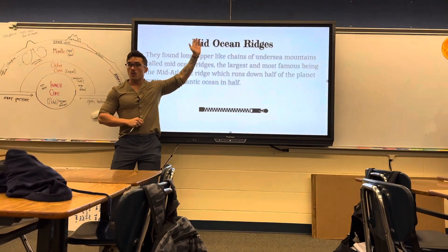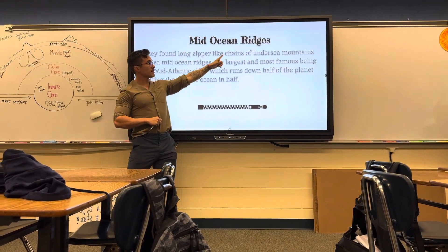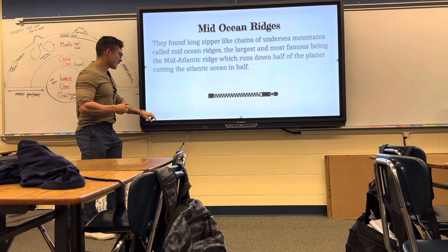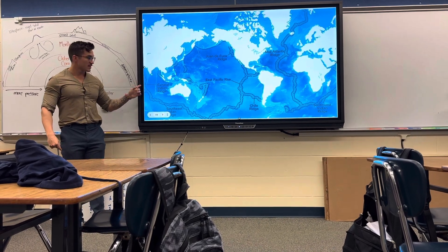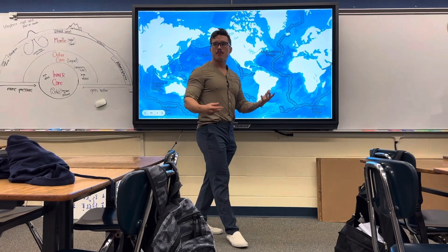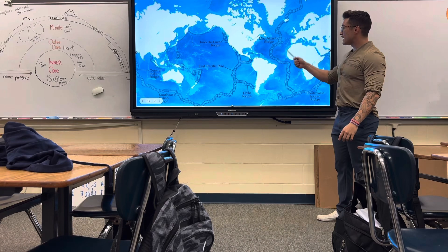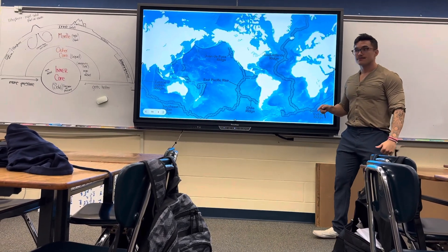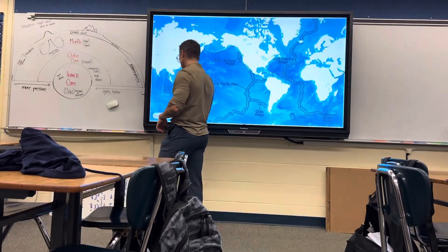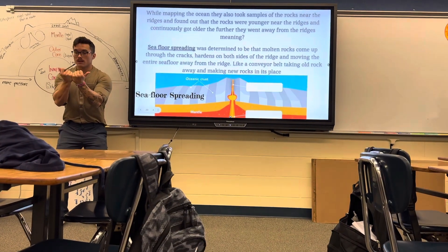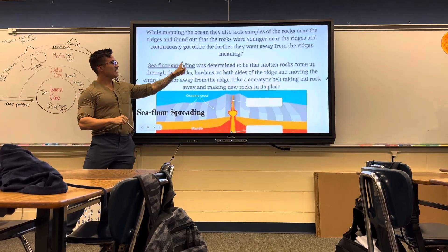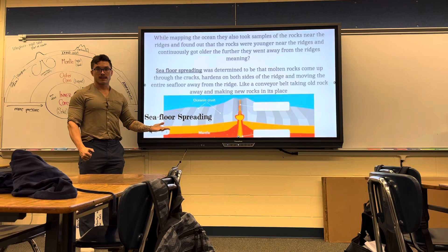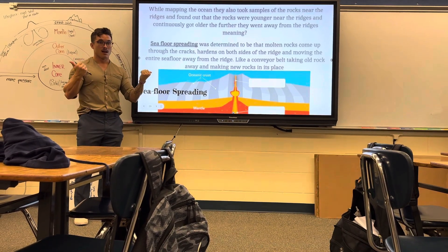You need to know what mid-ocean ridges are: they are long chains of undersea mountains in the middle of the ocean - that's why they call it 'mid-ocean.' These ridges go around the entire world like the seams on a baseball. Basically wherever these are, the crust is moving away from them and new baby rock is being formed right at those seams. The idea that the crust is spreading away from those points is called sea floor spreading: old rock comes up through the cracks, it hardens and spreads out like a conveyor belt.